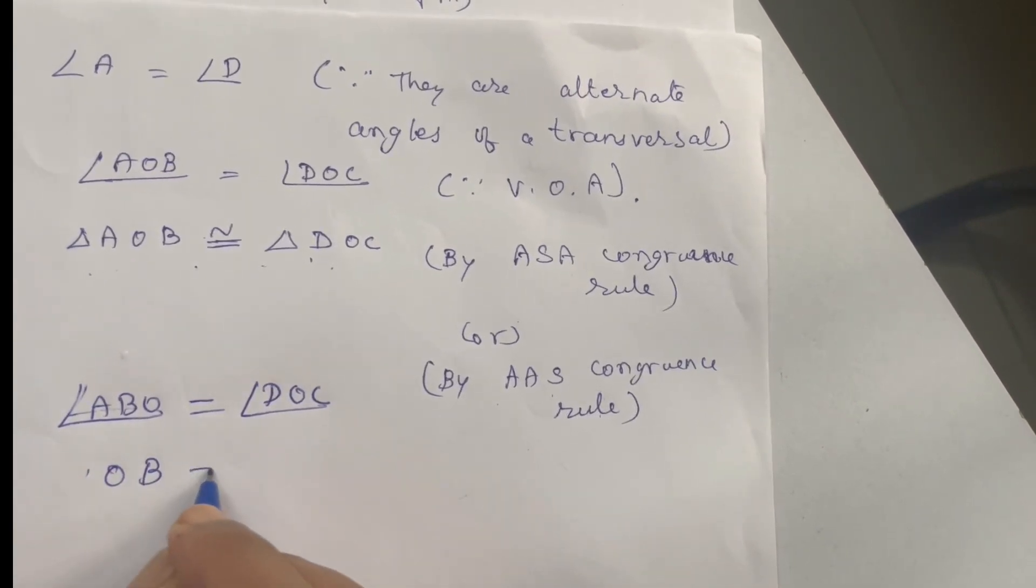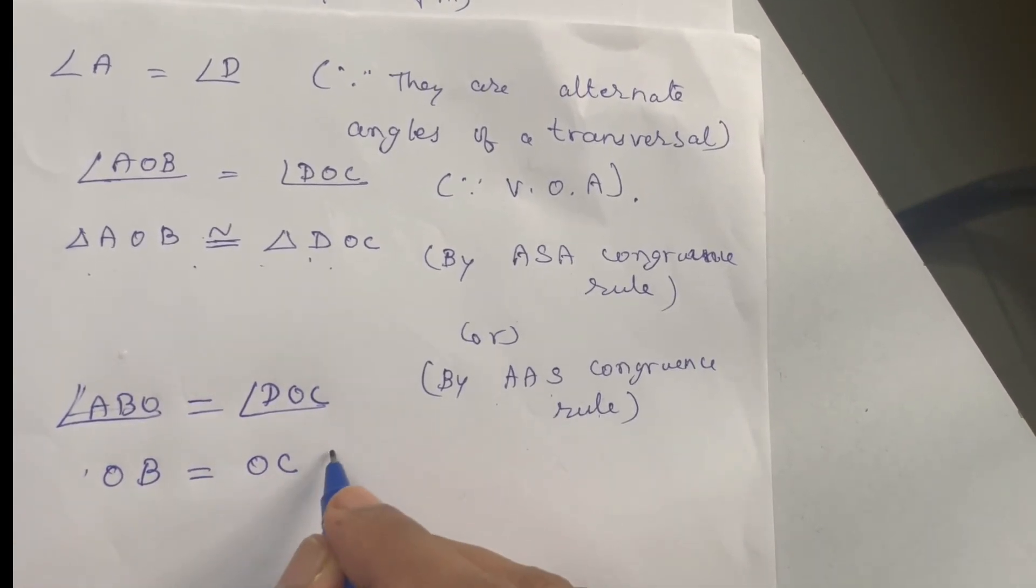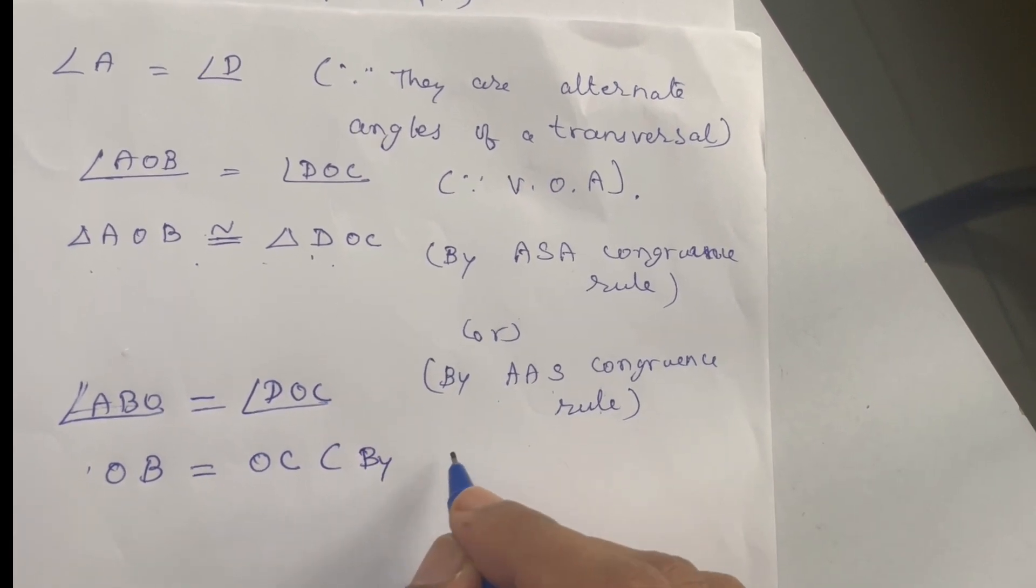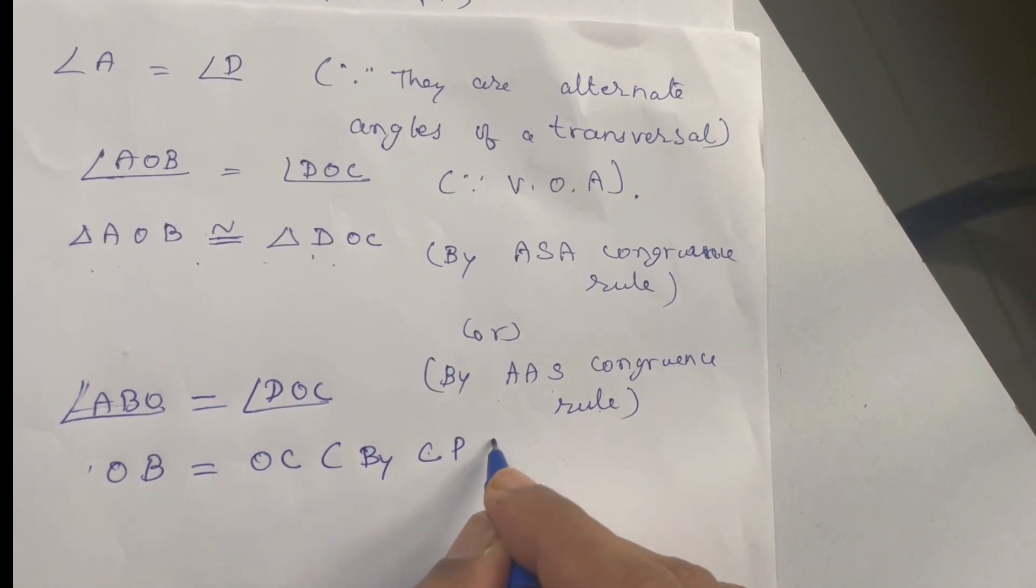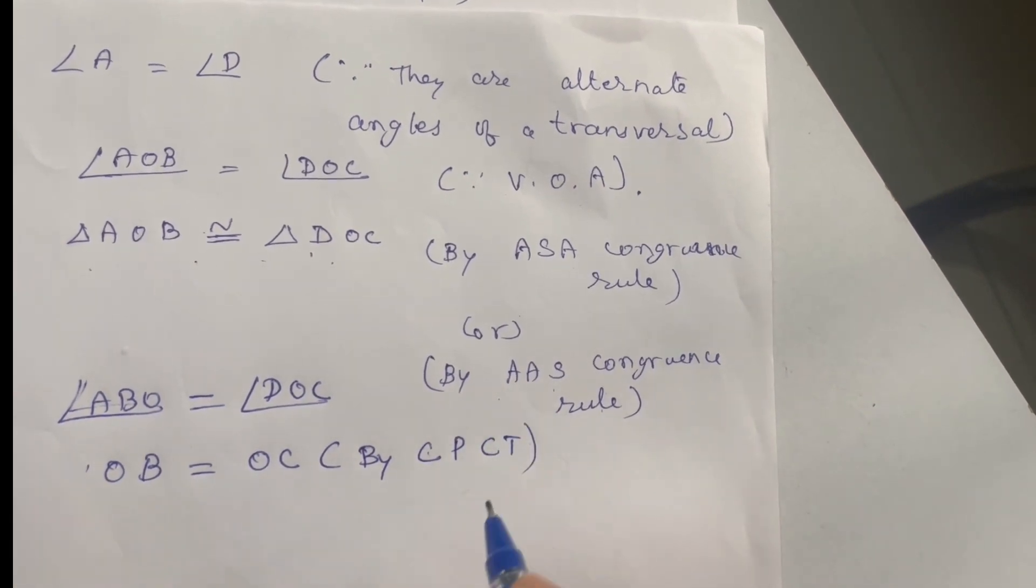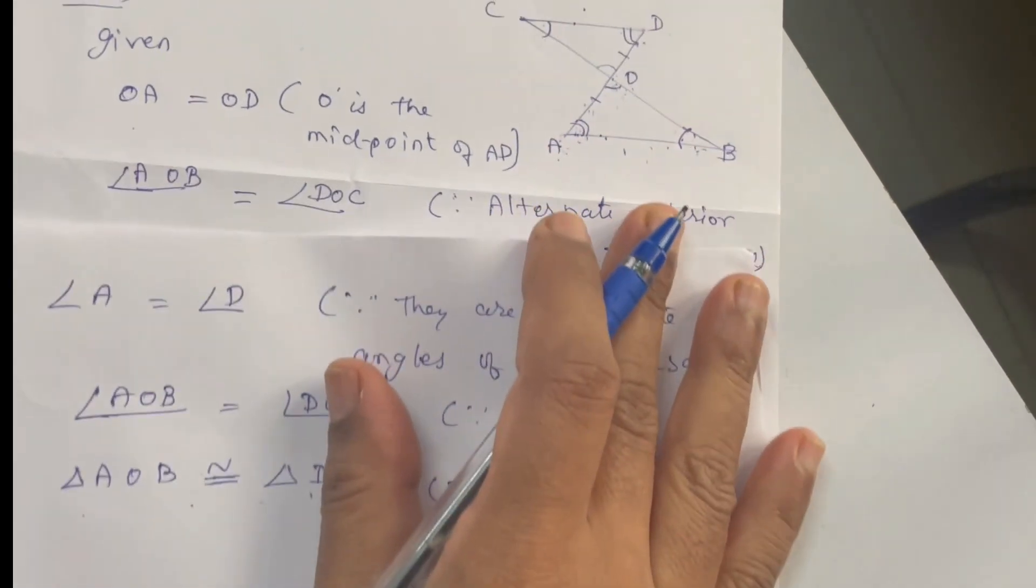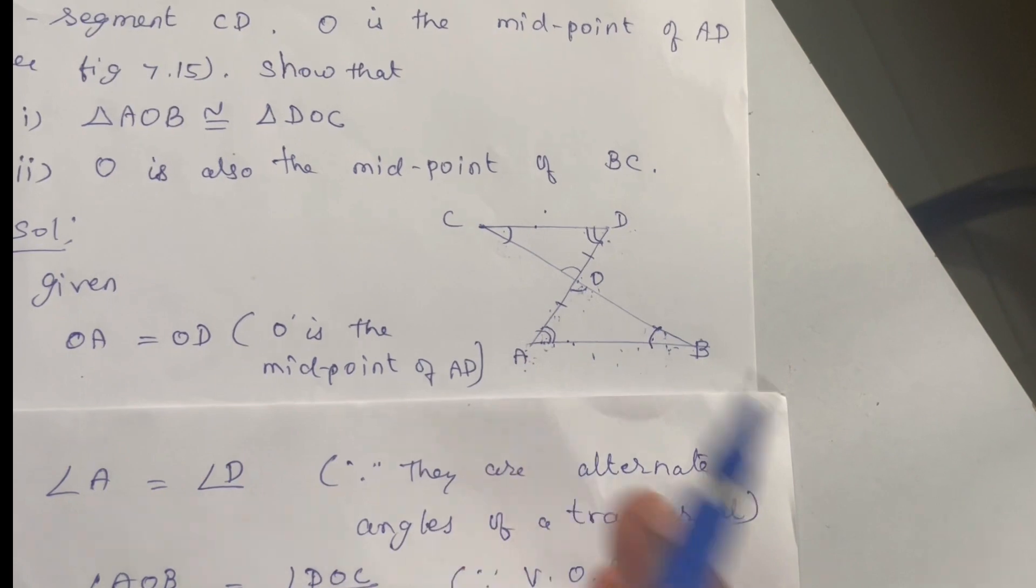OB equal to OC. Reason is by corresponding parts of a congruent triangle are equal. By CPCT, O is the midpoint of the line BC.